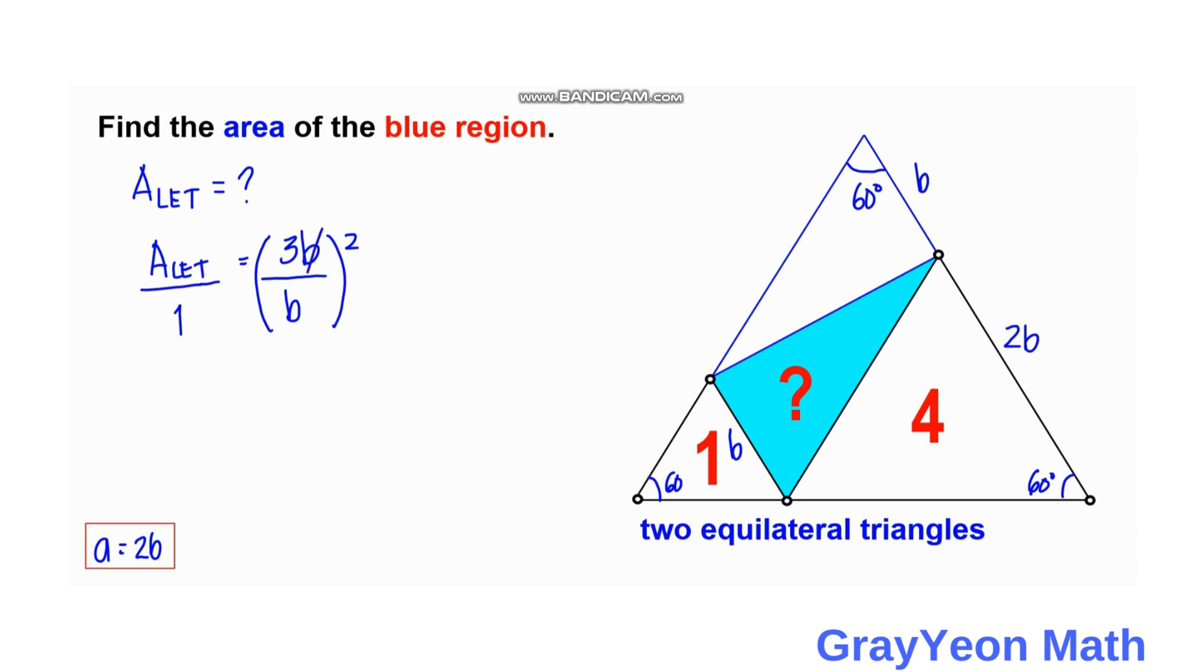We cancel this b and a, and this becomes 3 squared. Area of the LET is equal to 9 square units.